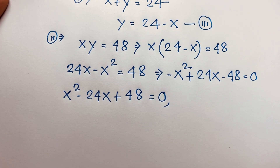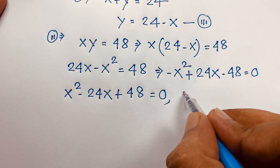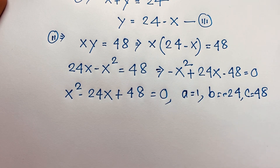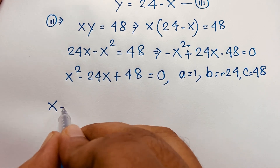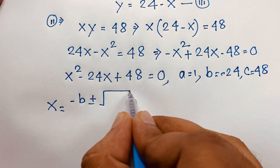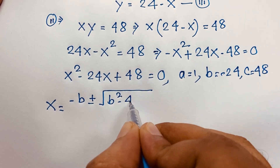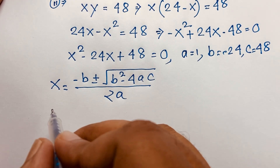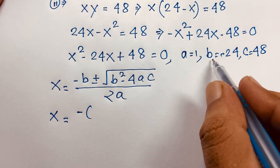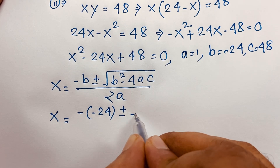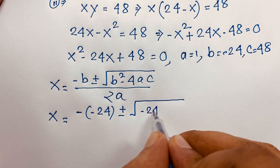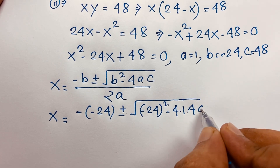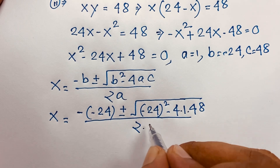Multiplying both sides by negative 1, we get x squared minus 24x plus 48 is equal to 0. Now we'll find x using the quadratic formula. Here a is equal to 1, b is equal to minus 24, and c is equal to 48. So x equals minus b plus or minus square root of b squared minus 4ac, all over 2a.